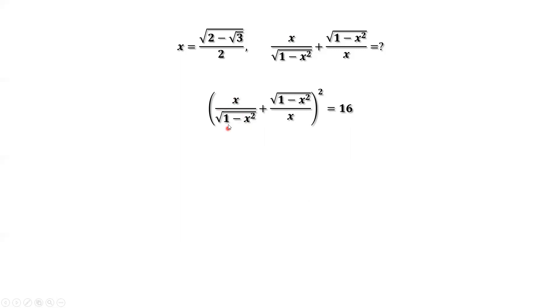x divided by square root of 1 minus x squared plus square root of 1 minus x squared divided by x squared equals 16. Taking square roots on both sides of this equation, we have the final answer is square root of 16, which is 4.